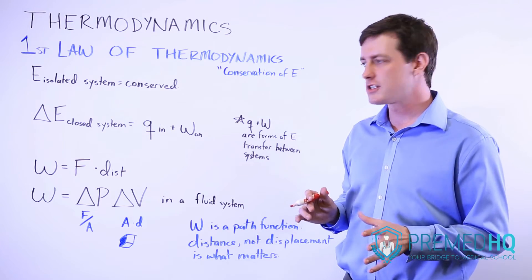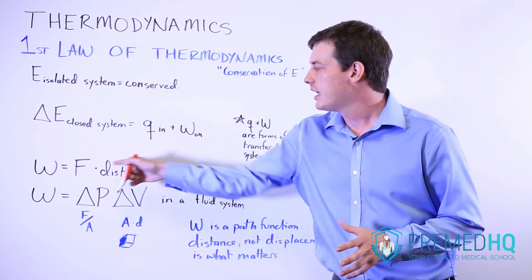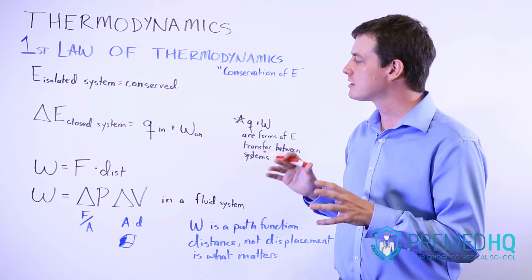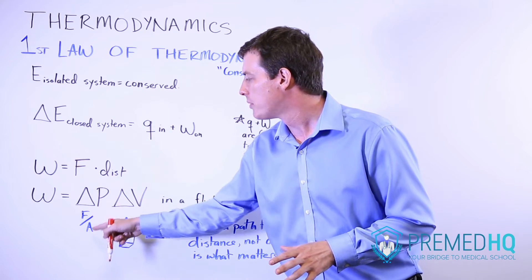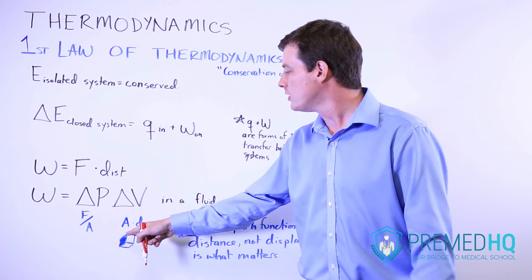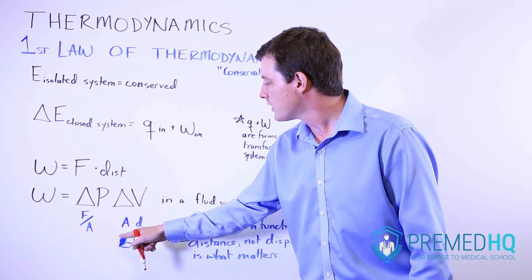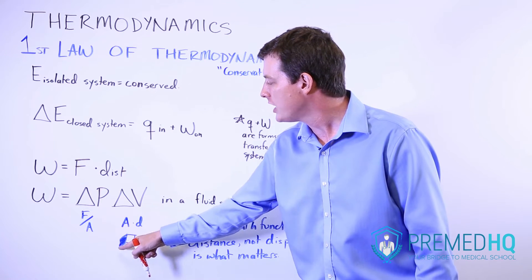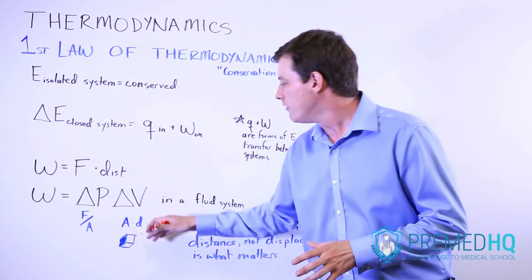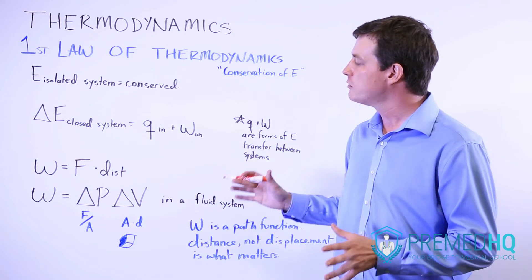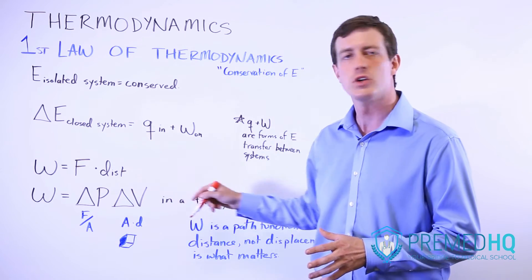But the really interesting thing to understand is that this PV work formula is very similar to the FD work formula. It's just expressed in three-dimensional terms. One definition of pressure is force per unit of area. And if you realize that volume is created when you have some surface area that is moved over a distance, if we took the shaded area and moved that over a distance we would be producing a volume there. Once you realize that you can cancel out the A's here and what you're left with is work equals force times distance.